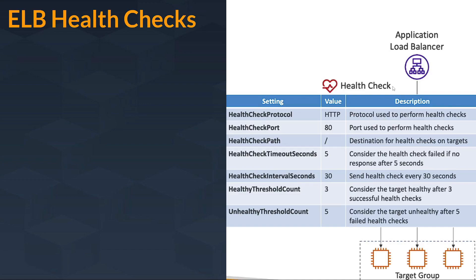The first setting is the health check protocol. In health check protocol you will have the HTTP value — that is the protocol used to perform health checks. The port code is set to a default of 80, but you can customize it. Health check path: if you have your own application, the default value will be slash, but you can also give the full URL path.